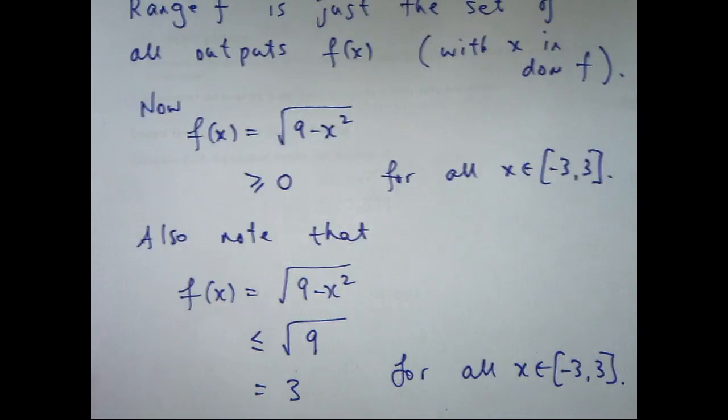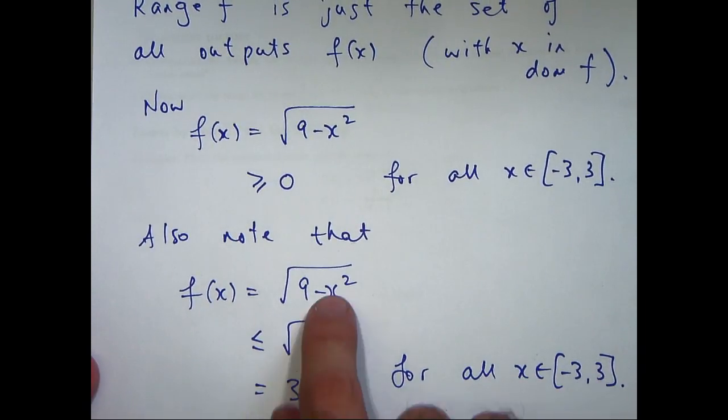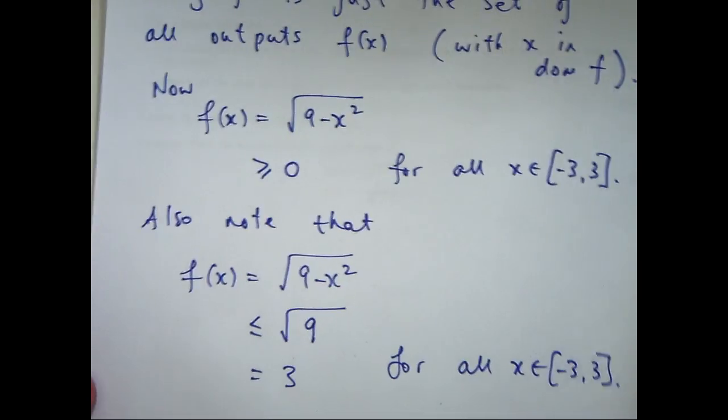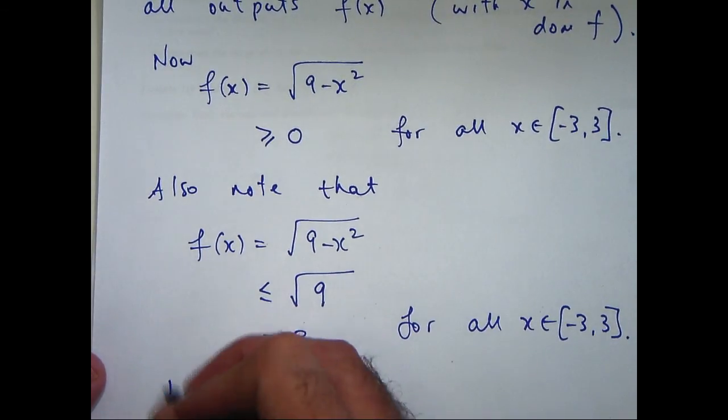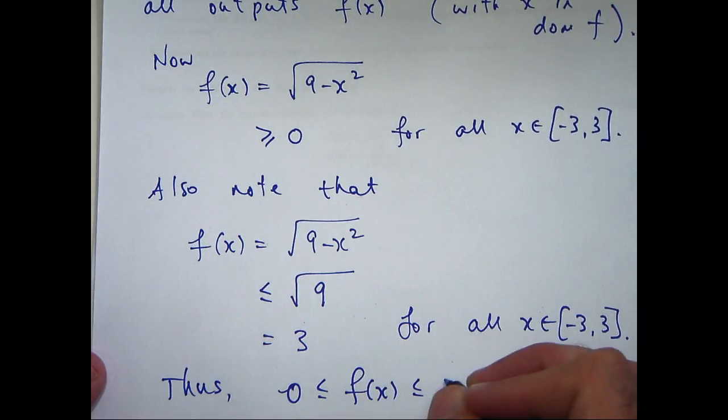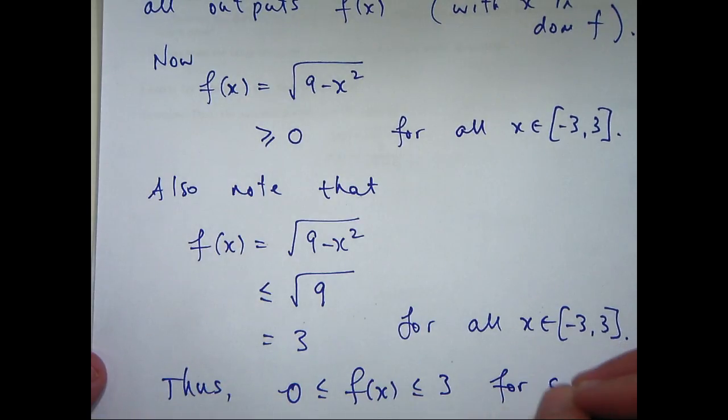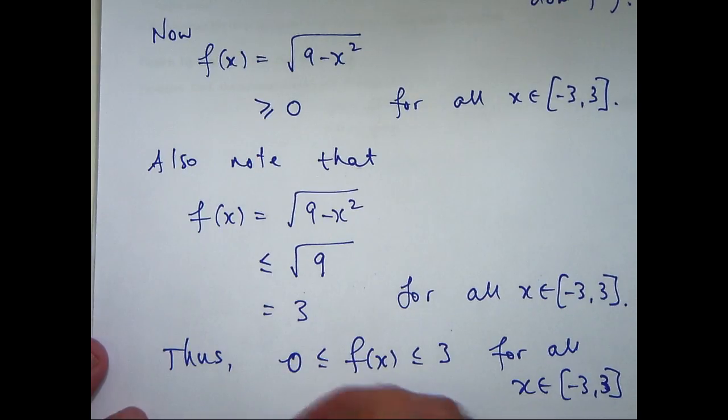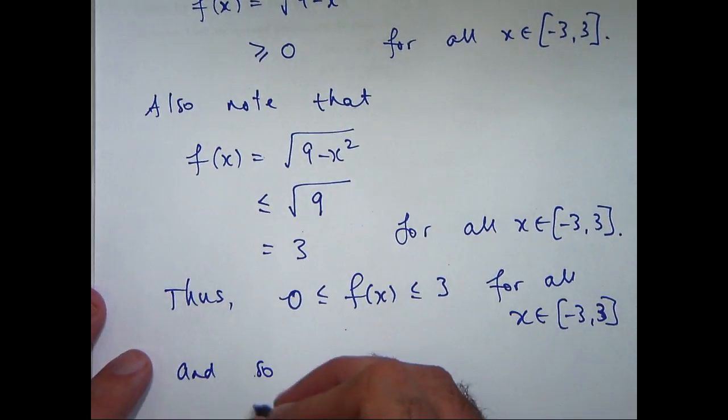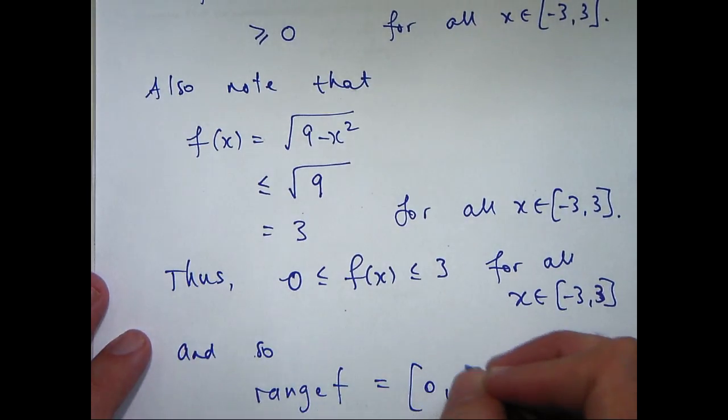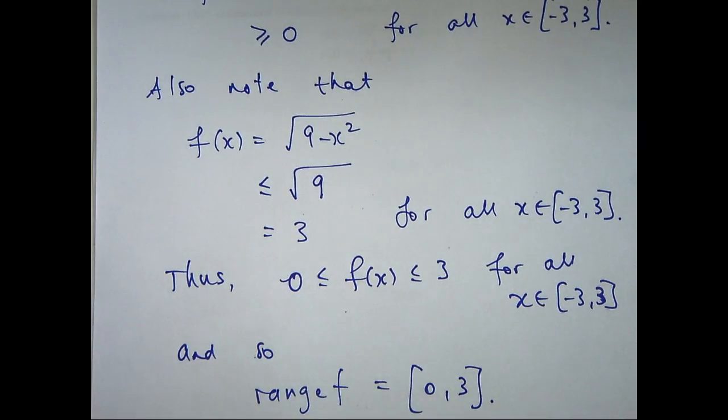So this is the range. Now, note that x equals 0 is in our domain, so we can have equality here. Not just a strict inequality. All right, so f(x) is between 0 and 3 for all x points in the domain and so the range of f is just this interval here. Okay, so that's that particular problem done.